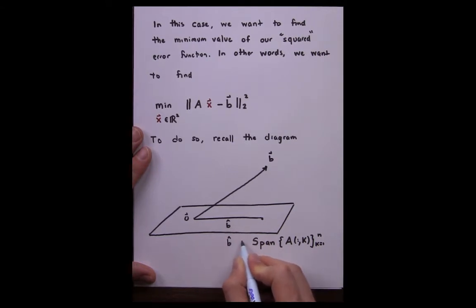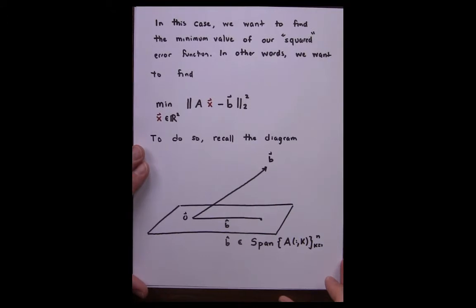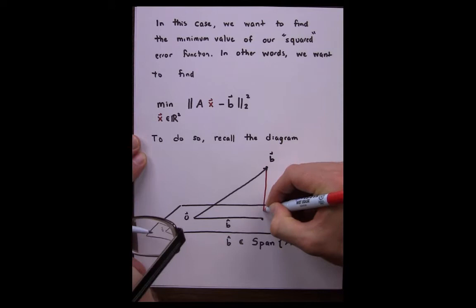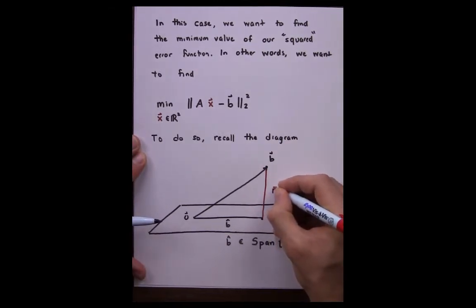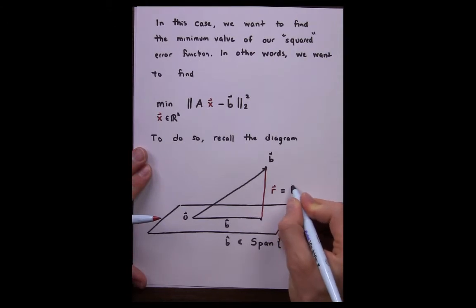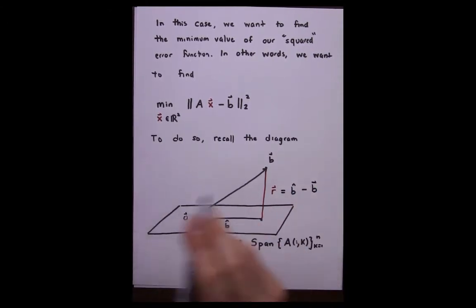In other words, that is the projection of B onto the span of the columns of A. The difference between the output vector B and the projection vector B hat we call R, known as the residual vector.